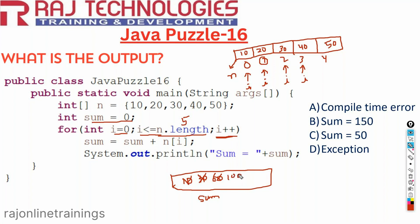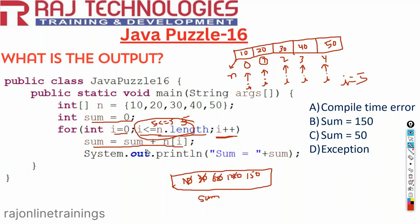Again i plus plus, the value of i is now 4. 4 less than or equal to 5, condition is true. Sum equal to sum plus n of i, so 50 will get added to the previous sum of 100. The value of sum will be 150. Again i plus plus, i will become 5. Now 5 less than or equal to 5 — the condition is true. It comes to this statement: sum equal to sum plus n of 5.